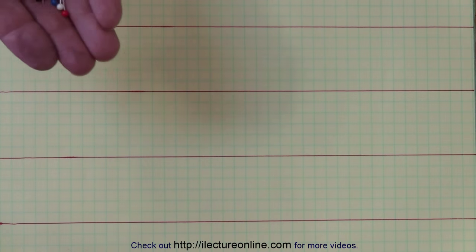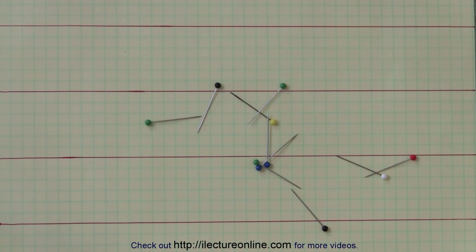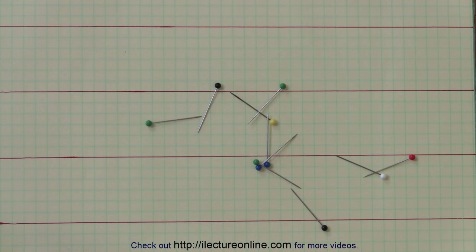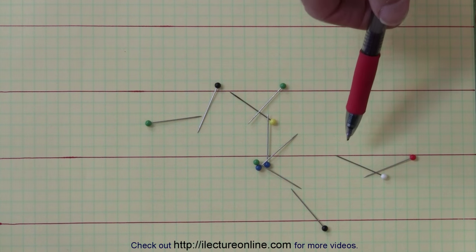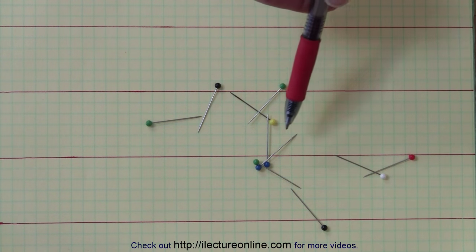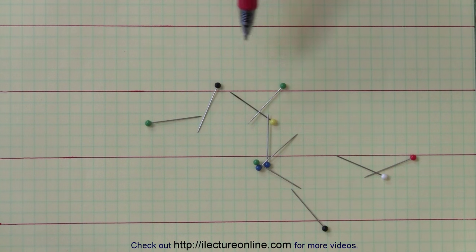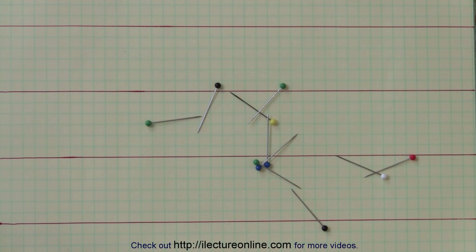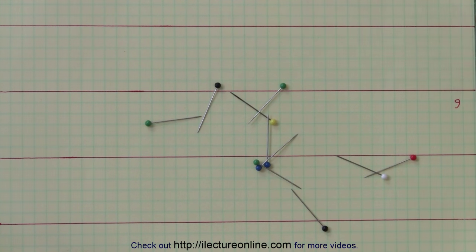Here's my first stack of 10 needles. Now we're going to count to see how many needles actually touch the line. 1 touch, 2 touches, 3, 4, 5, 6 touches. So we have 6 touches. I'll write down the number 6, and now we're going to do it again.